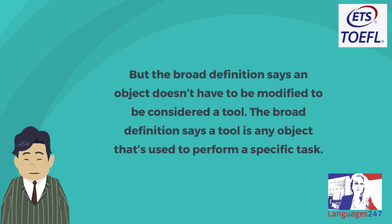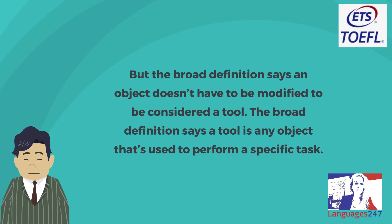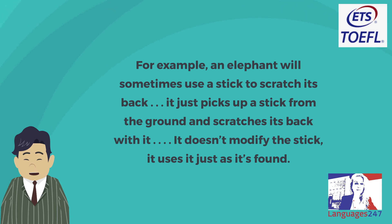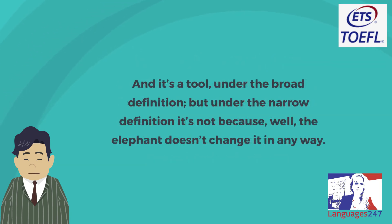'But the broad definition says an object doesn't have to be modified to be considered a tool. The broad definition says a tool is any object that's used to perform a specific task. For example, an elephant will sometimes use a stick to scratch its back. It just picks up a stick from the ground and scratches its back with it. It doesn't modify the stick — it uses it just as it's found. And it's a tool under the broad definition, but not under the narrow definition, because the elephant doesn't change it in any way.'